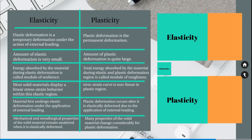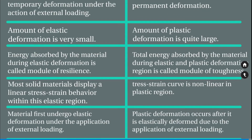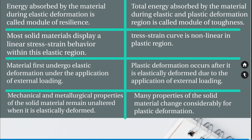Now for the comparison study between elasticity and plasticity. First, elastic deformation is a temporary deformation under the action of external loading, whereas plastic deformation is permanent. Second, the amount of elastic deformation is very small, but the amount of plastic deformation is quite large. Third, energy absorbed by the material during elastic deformation is called the modulus of resilience, while the total energy absorbed during both elastic and plastic deformation is called the modulus of toughness. Fourth, most solid materials display a linear stress-strain behavior within the elastic region, whereas the stress-strain curve is non-linear in the plastic region.